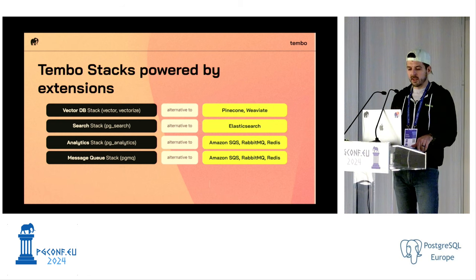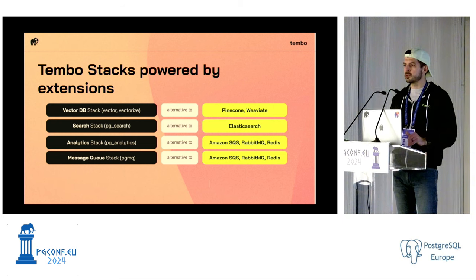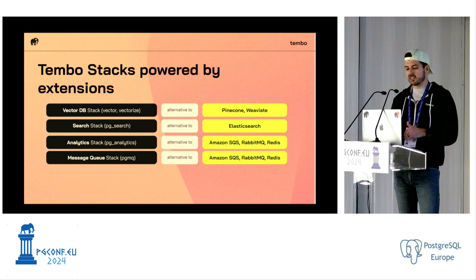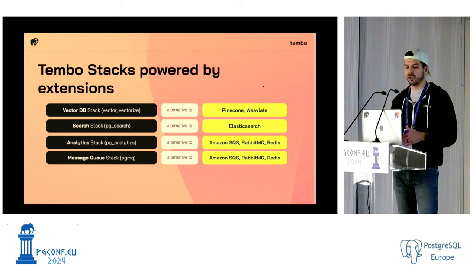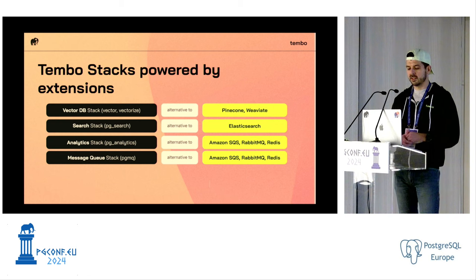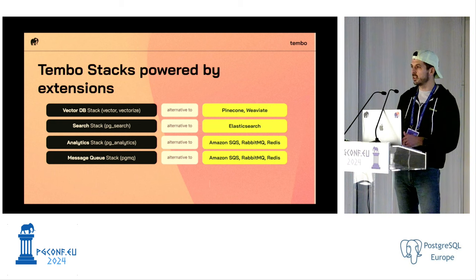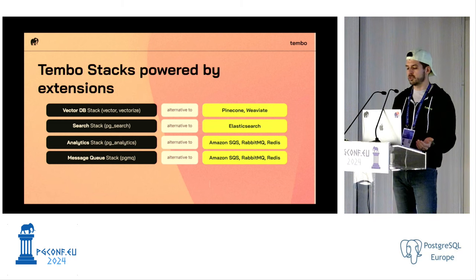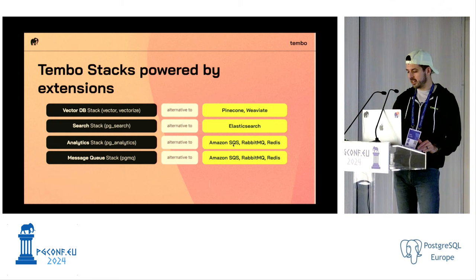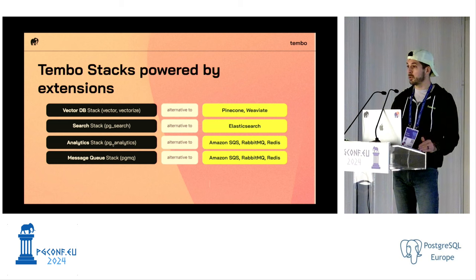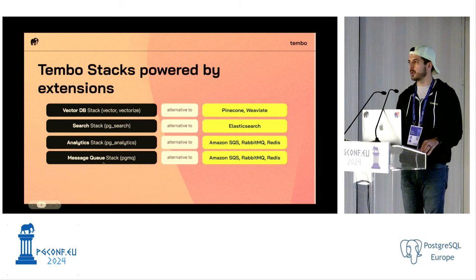Tembo is a managed Postgres platform — we have a cloud service where you can provision Postgres clusters, but each one of our clusters is tailored to specific workloads. We have different types of stacks: there's the vector database stack, all powered by open source Postgres extensions. Our vector database is the alternative to Pinecone or Weaviate, our search stack is an alternative to Elasticsearch using ParadeDB's PGSearch extension, our analytics stack is powered by PGAnalytics, and our message queue stack is powered by PGMQ.